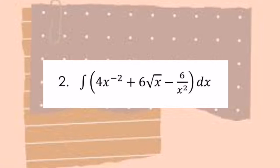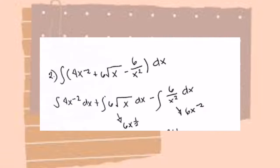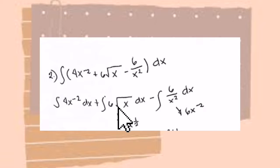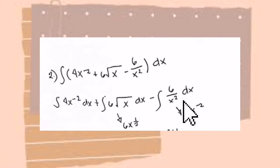Problem number 2: the integral of the quantity 4x raised to negative 2 plus 6 square root of x minus 6 over x squared, dx. We distribute the dx and separate them: the integral of 4x raised to negative 2 dx, plus the integral of 6 square root of x dx, minus the integral of 6 over x squared dx.